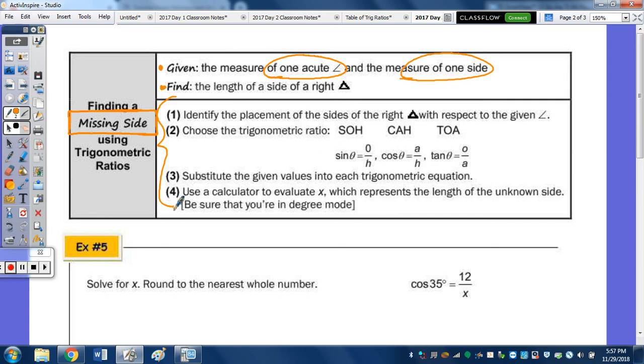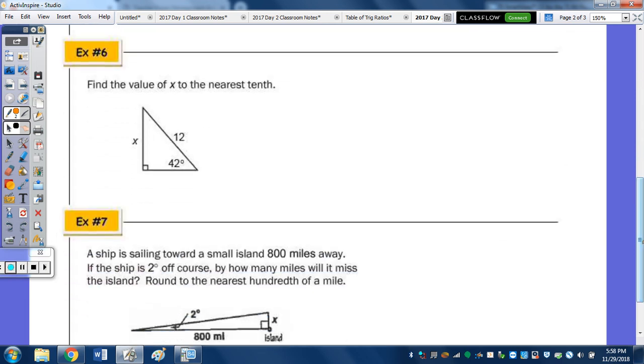Let's model the steps in example 6. Find the value of x to the nearest tenth. So we have an angle of 42 and the two sides. I would just encourage you to use the information that's given so that you don't end up with a computational error. First step was to identify the placements of the sides with respect to your angle. According to the 42 degree angle, we have the side opposite and hypotenuse. So that's going to tell us which trig ratio to use. The O and the H is the sine. So we're going to use the sine. Substitute the given values into each trigonometric equation. It's the sine of the angle. I replace the angle with 42. The length of the side opposite is the x divided by the length of the hypotenuse, which is 12.